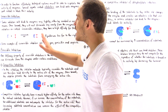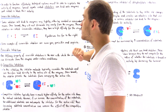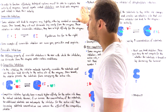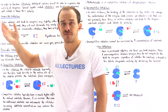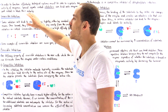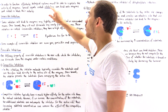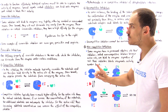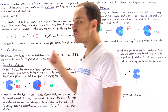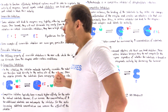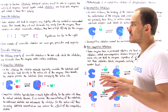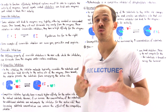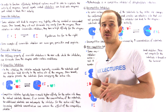In order to function effectively, biological systems must be able to regulate and control the activity and functionality of enzymes. Special agents we call inhibitors can bind onto enzymes and inhibit or block their activity. There are two categories of inhibitors: irreversible inhibitors and reversible inhibitors.